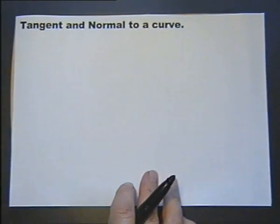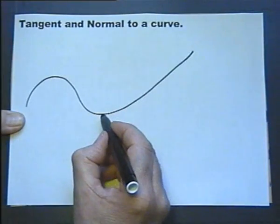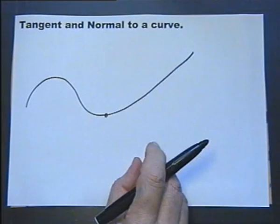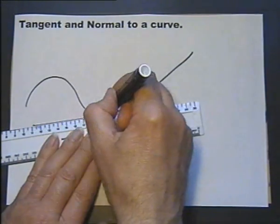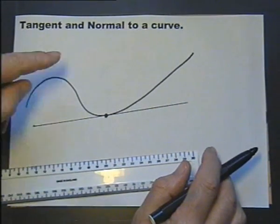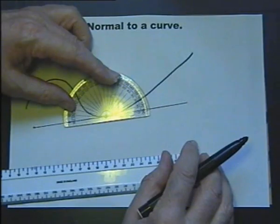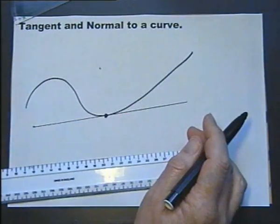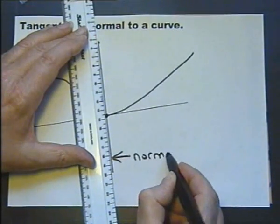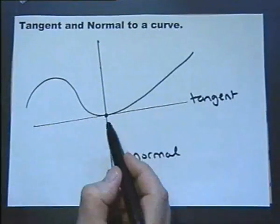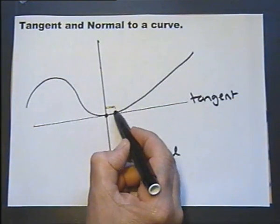Now let's talk about the two words tangent and normal. We've already talked about tangent — if we have a curve and we want to draw a tangent to a point on that curve, we're talking about a line that's just touching that curve at that point. That is called the tangent to the curve at that point. The normal is a line at right angles to that tangent. So at this point we have a tangent — a line just touching the curve — and we have a normal, which is at right angles to the tangent.